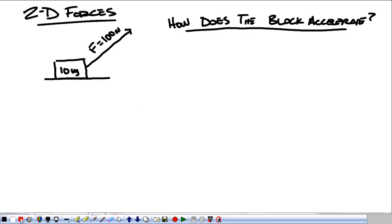What we need to do to figure out how this thing accelerates is to look at all of the forces acting on it, not just that force. So, down, we know we have the weight, and we know that doesn't depend on any of the other forces, so we can go ahead and say that that's 100 newtons.